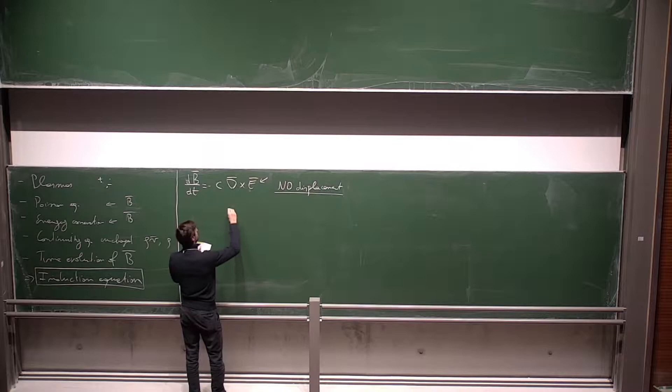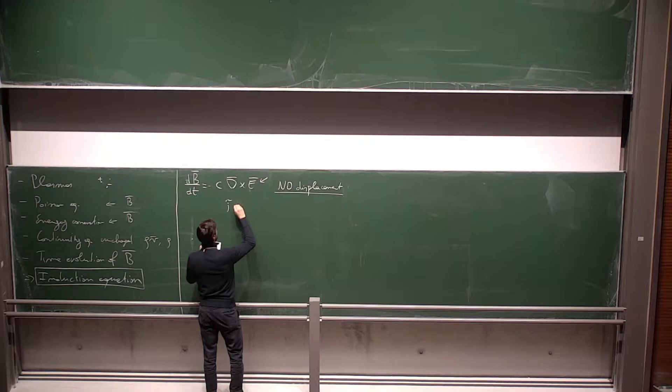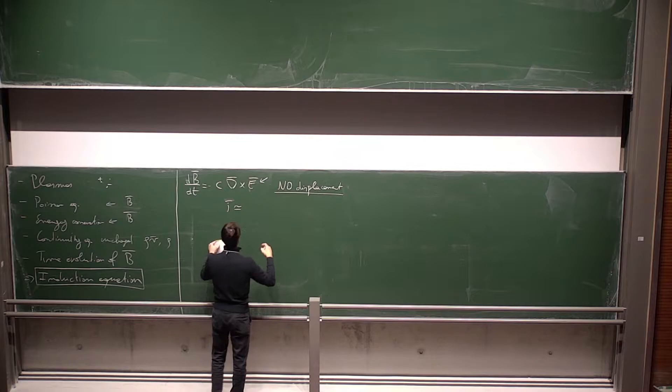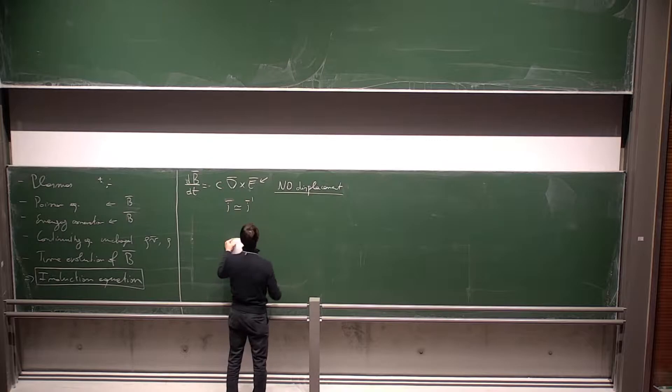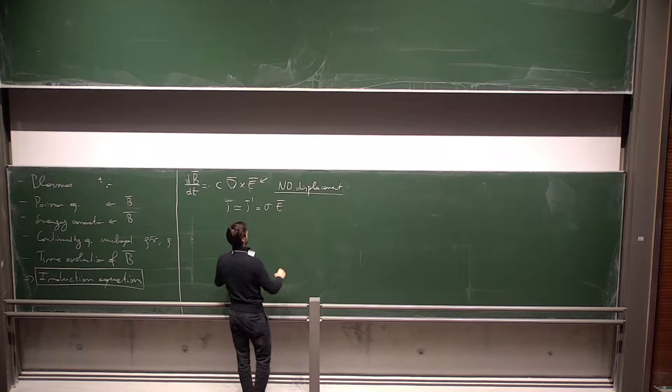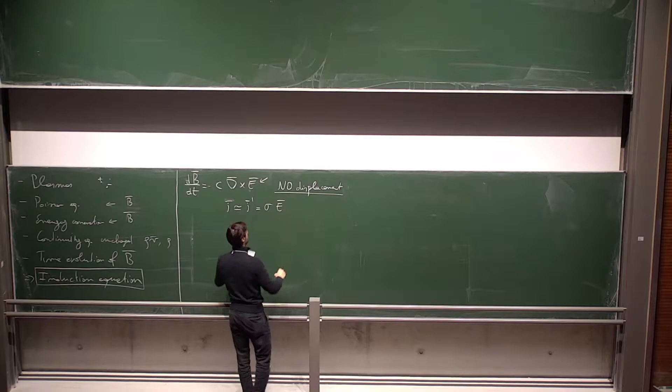Recalling from the introduction on plasmas: the current J that we observe is related to the current J' in the rest frame of the plasma. For non-relativistic plasmas we can approximate these as equal. J' is related to the electric field through the conductivity σ of the fluid.